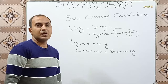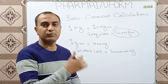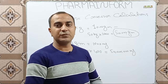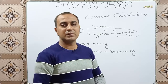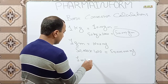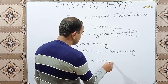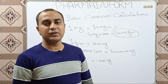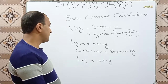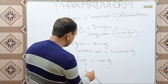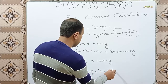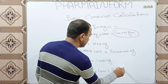The next question is how we convert milligrams into micrograms. Most people are confused about this, but it is also very simple. One milligram is equal to 1000 micrograms. So if we want to convert any quantity given in milligrams into micrograms, simply multiply it by 1000. For example, to convert 2 mg into micrograms, multiply 2 by 1000 to get the answer in micrograms.